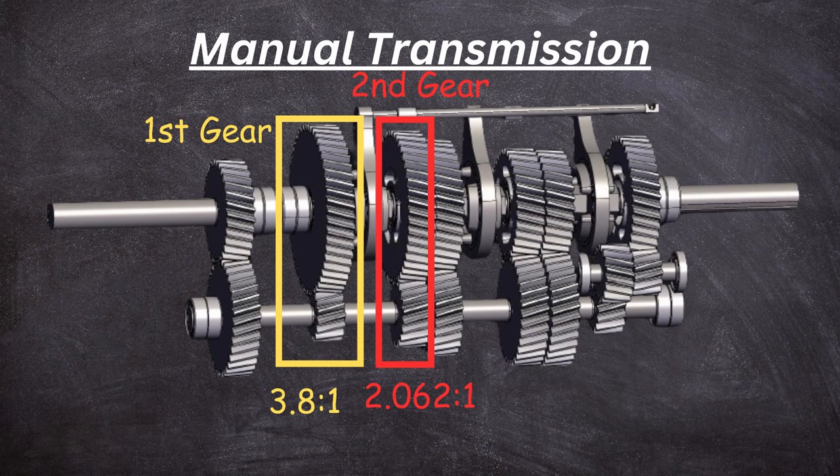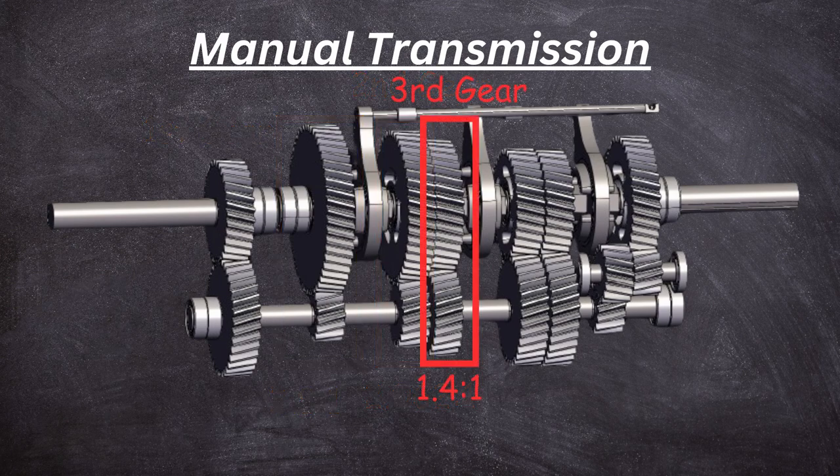In first gear we have a gear ratio of about 3.8 to 1 — the input shaft gear rotates 3.8 times for the output shaft gear to rotate once. In second gear the ratio is about 2.06 to 1, so the input rotates roughly 2.1 times per one output rotation. In third gear it is 1.4 to 1. The higher the gear, the more fuel efficient, but each step becomes harder to complete.